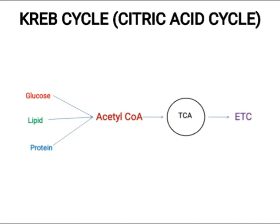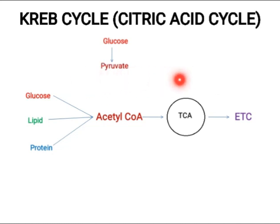Specifically, in case of carbohydrate or glucose metabolism, we get pyruvate in the process known as glycolysis. Now this pyruvate again converts into Acetyl CoA in the process which is known as pyruvate oxidation.